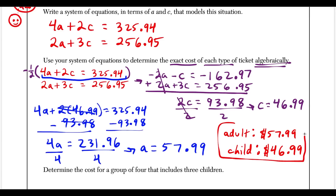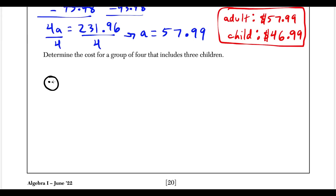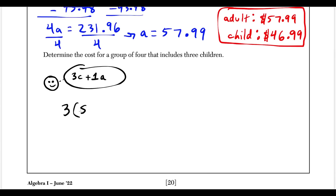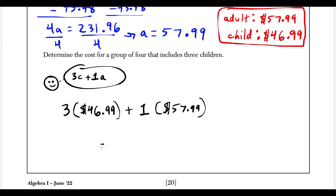For the last part, find the cost for a group of 4 with 3 children (1 adult). Calculate 3 × $46.99 + 1 × $57.99. Three child tickets plus one adult ticket gives a total bill of $198.96.